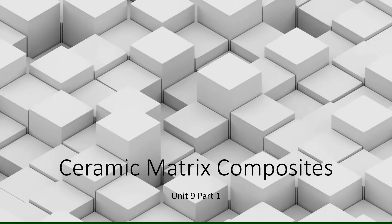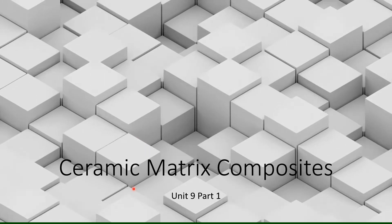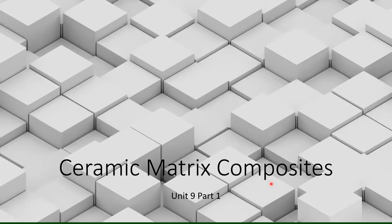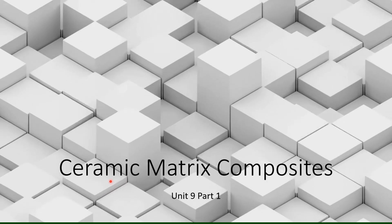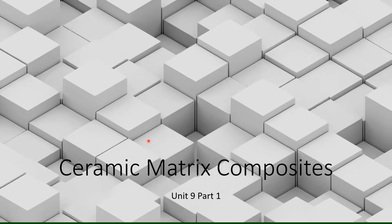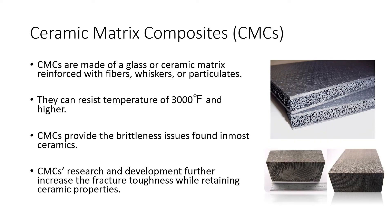In unit 9 part 1, we're going to study three different metric composites. The first one is ceramic, the second is metal, and then we will get into plastic, which is your polymer. Ceramic matrix composites — we call them CMCs. If you see this abbreviation, you should know that we refer to ceramic composites.